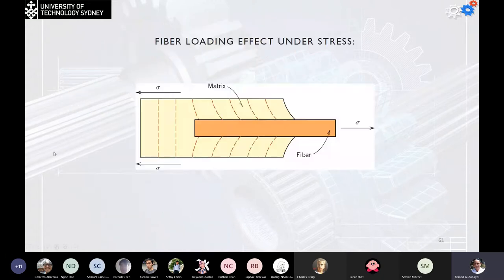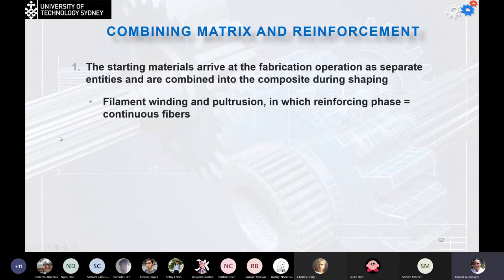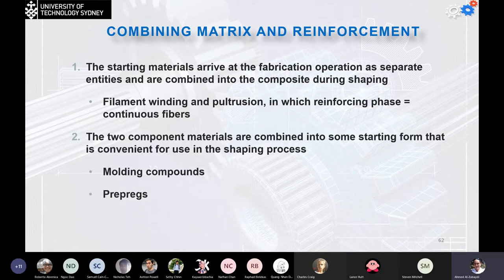Inside fiberglass, the matrix — which is the resin or thermoset material — holds the structure while the fiber provides elasticity and reinforcement, preventing the material from being brittle. Usually the starting materials arrive at the fabrication operation as separate entities and are combined into a composite during the shaping, for example in filament winding and pultrusion where the reinforcement phases are continuous fibers. The two components can also be combined into starting forms convenient for shaping processes, such as molding compounds or pre-pregs.